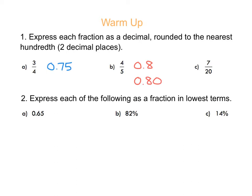7 over 20: if you go 7 divided by 20, that equals 0.35. You can put the 0 in front or just write 0.35 — you'll see it written both ways.